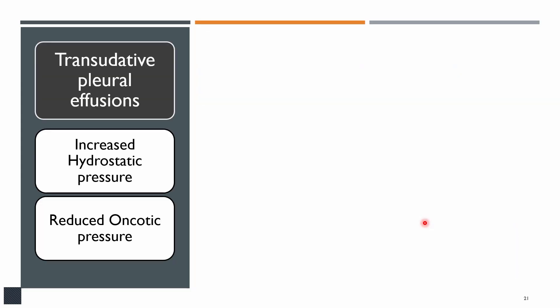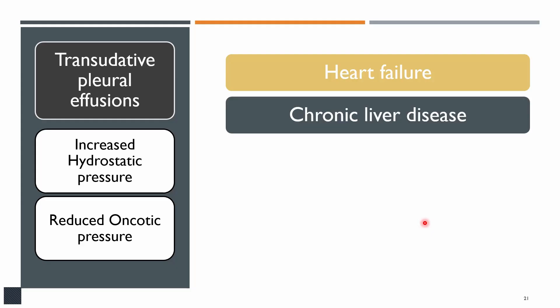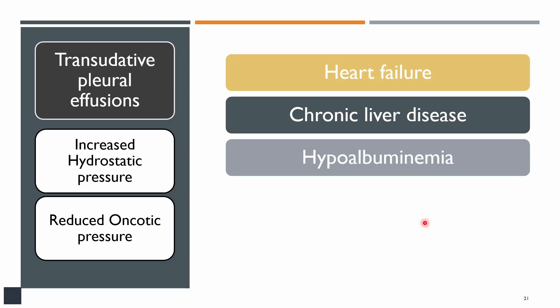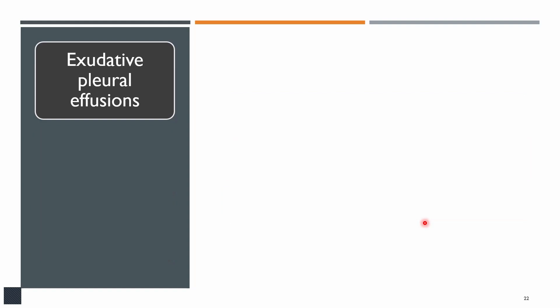Transudative effusions are produced due to increased hydrostatic pressure or reduced oncotic pressure. Most commonly it is due to heart failure — in a patient with known heart disease, reduced ejection fraction, dilated heart on x-ray, raised JVP, and bilateral pitting pedal edema all point to heart failure as the cause. In such patients, pleural aspiration is not needed. Transudative effusion also occurs in chronic liver disease due to hypoproteinemia or hypoalbuminemia, and in nephrotic syndrome and renal failure.